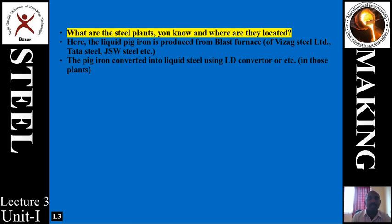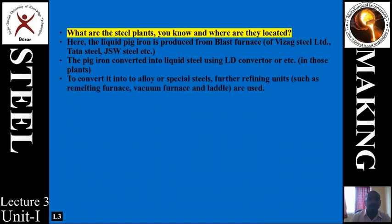As the name suggests, an LD converter converts iron into steel. The full form of LD is: L stands for Linz and D stands for Donawitz — these are the main cities where this particular process of converting iron into steel was initiated by scientists in the 19th century.